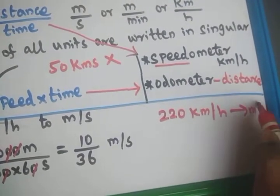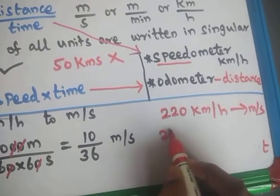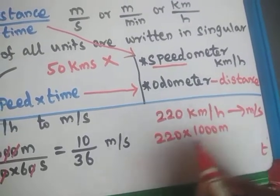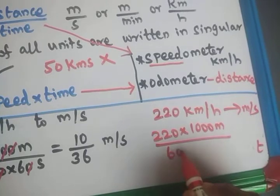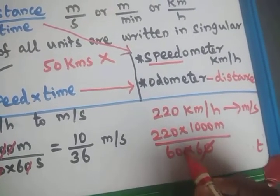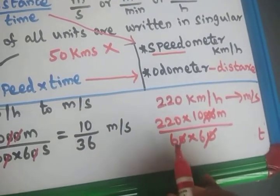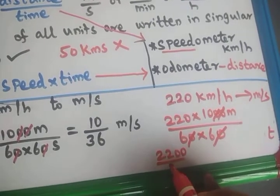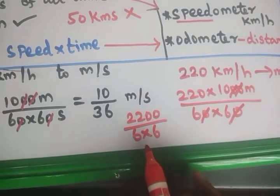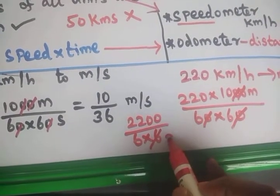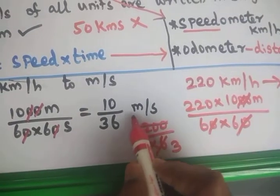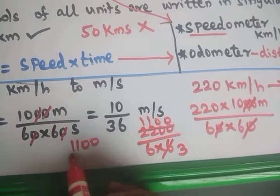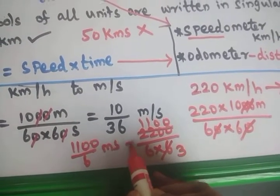Now convert 220 kilometer per hour into meter per second. Write 220, then 1 kilometer equals 1000 meters, divided by 1 hour which is 60 into 60 seconds. Cancelling the zeros, we get 2200 divided by 36, which simplifies — 2 twos are 6 — giving 1100 by 6 meter per second. So the answer is 1100 by 6 meter per second.